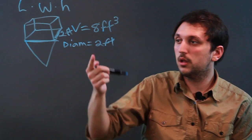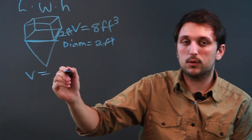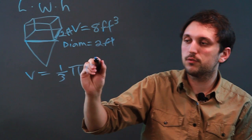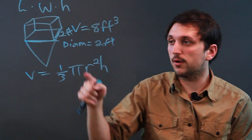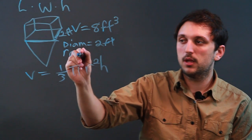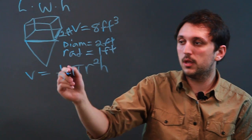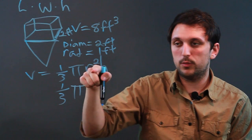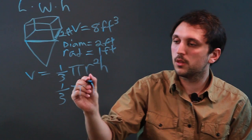The volume of a cone equals one-third pi r squared h. So if our diameter is 2 feet, that means our radius is 1 foot. And we say one-third pi — well, 1 squared is just 1, times h.